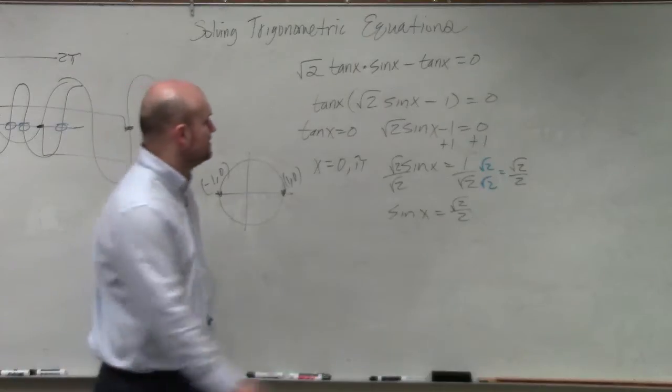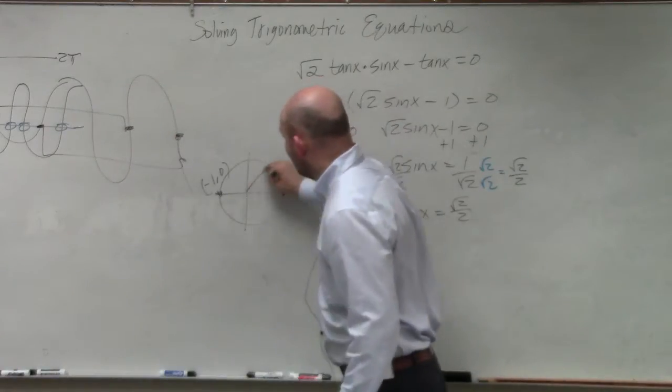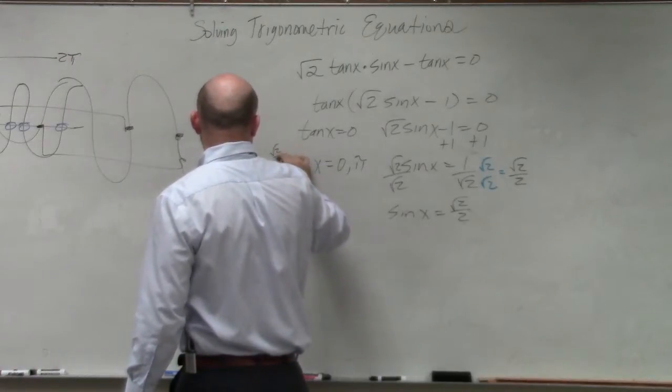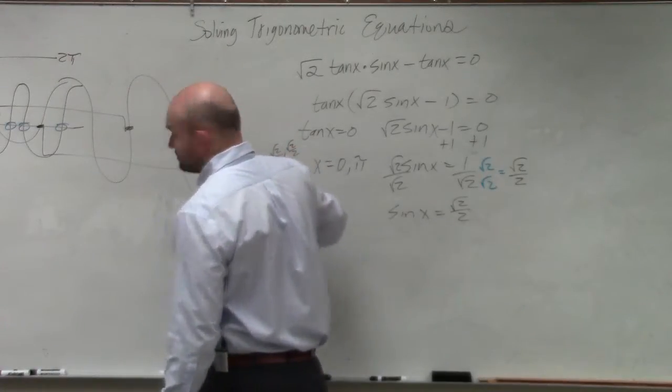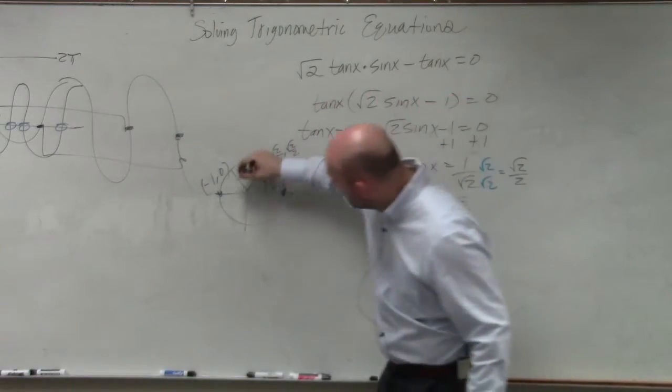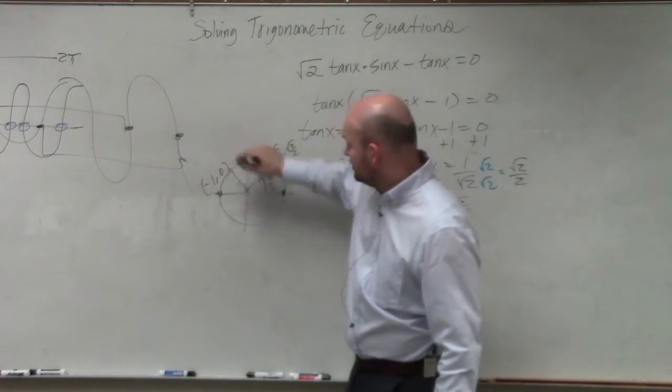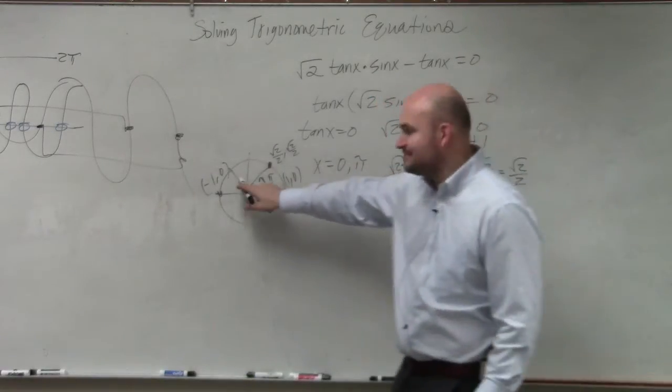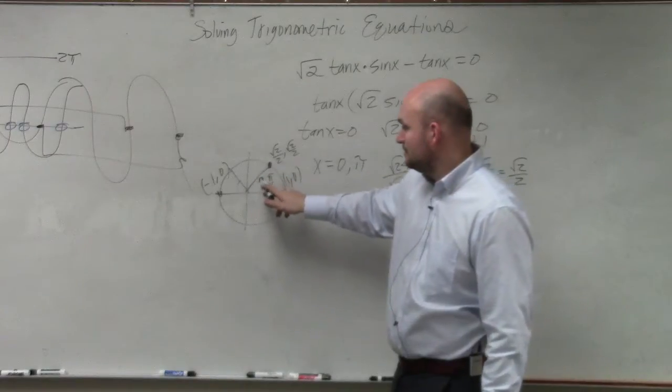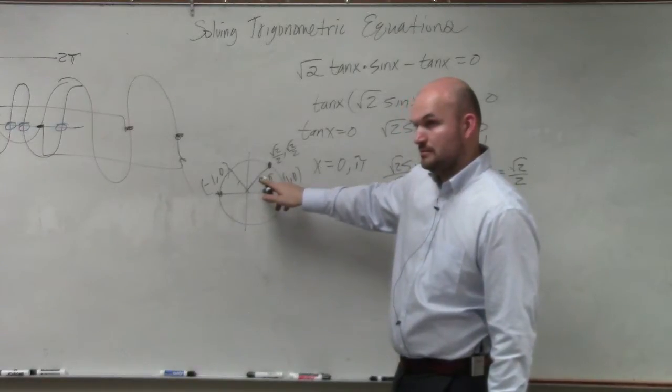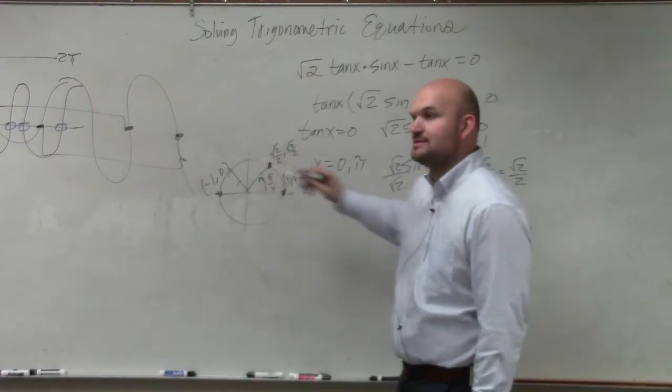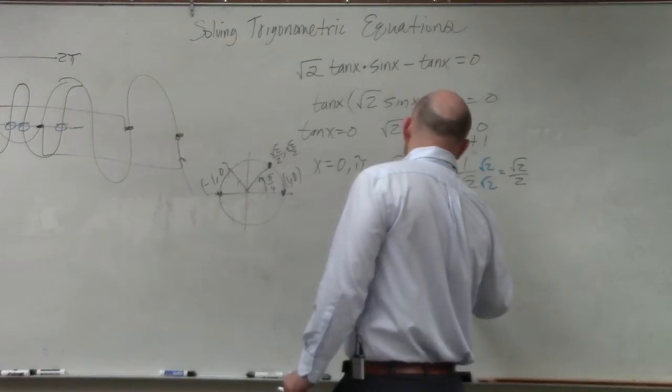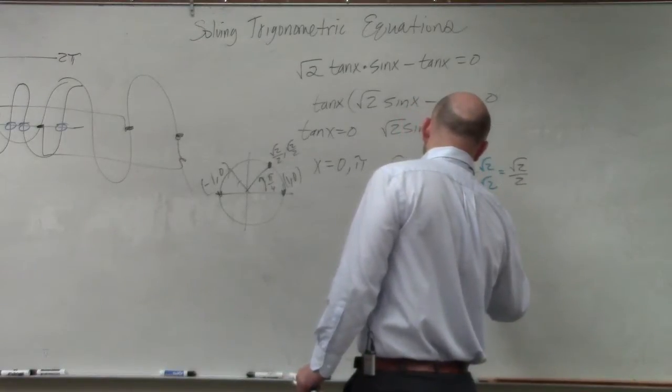So therefore, I need to figure out what angles is equal to the square root of 2 over 2. What solutions give me that? So you know pi over 4, and then what other one is it also positive? Well, it's the other time when pi over 4, but it's in the second quadrant. So that angle would be 3 pi over 4. It has to be in the second quadrant. But it's sine. So that is 3 pi over 4. So x equals pi over 4 and 3 pi over 4.